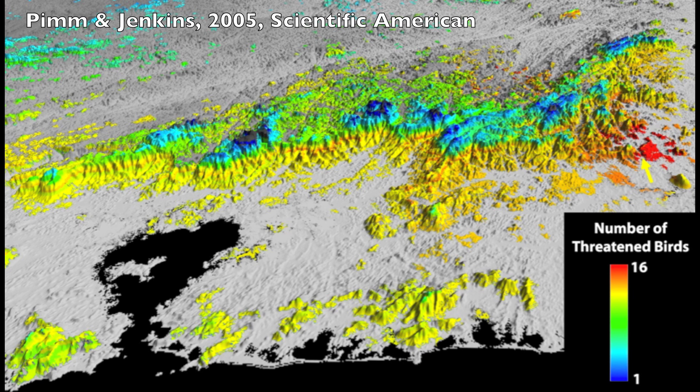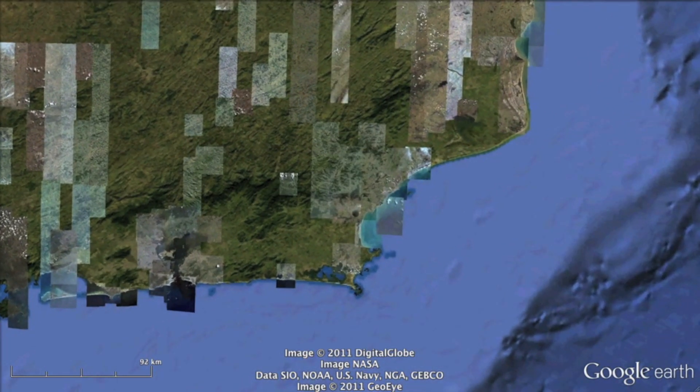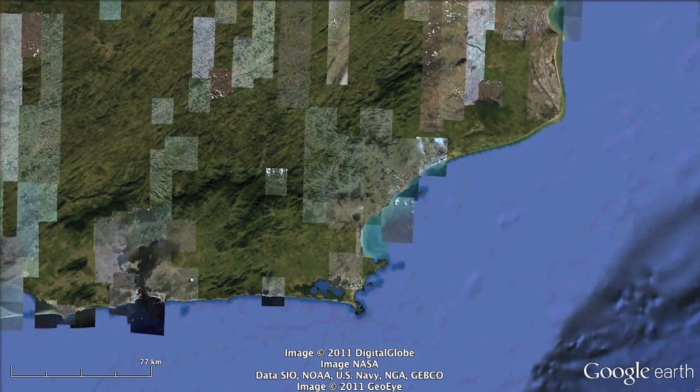We can map out in some considerable detail where those species are likely to live. This particular image plots the remaining forest against elevation and color codes the image by how many threatened species remain in these places. All of these images are courtesy of my colleague Clinton Jenkins. If we want to understand why there are so many threatened species here, one can look at the remote sensing.